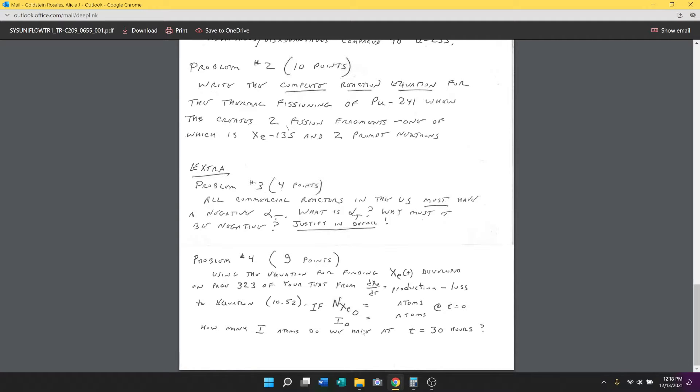Using the equation for finding xenon developed on page 323 of your text from the rate of change of anything equals production minus loss. The number of atoms of xenon should have been 6 times 10 to the 16th, and the number of atoms of iodine is also 6 times 10 to the 16th. I want to know how many iodines do we have at the end of 30 hours. I will also accept if you do the number of xenons at the end of 30 hours. Any questions on that?